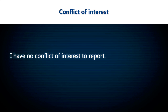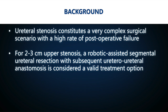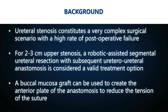Ureteral stenosis constitutes a very complex surgical scenario with a high grade of postoperative failure. For 2–3 cm upper strictures, a robotic-assisted segmental ureteral resection with subsequent uretero-ureteral anastomosis is considered a valid treatment option. A buccal mucosa graft can be used to create the anterior plate of the anastomosis with the aim of reducing the tension of the suture.